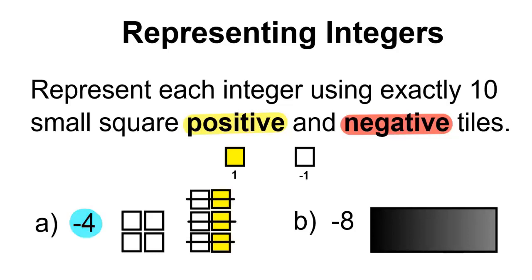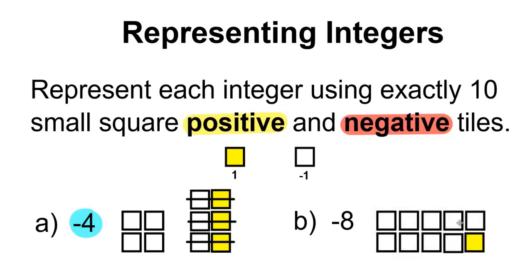B. For negative 8, this is represented by 9 negative tiles and 1 positive tile. Cancel out the zero pair, and you're left with negative 8.